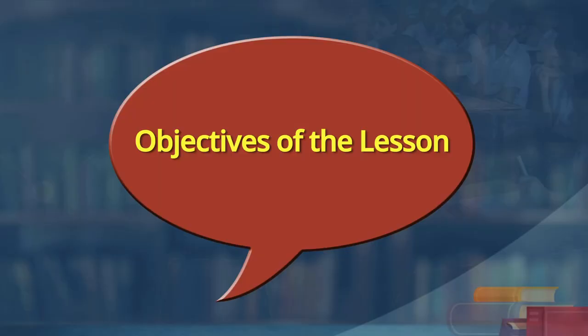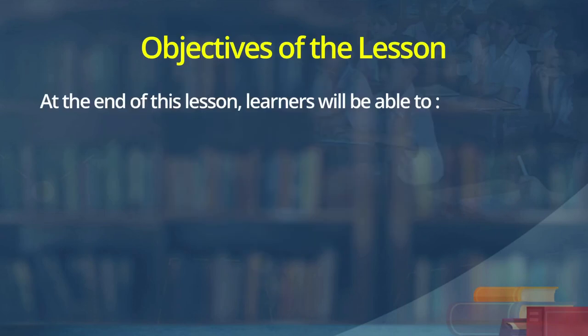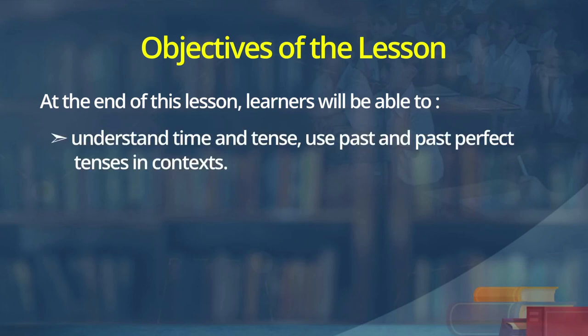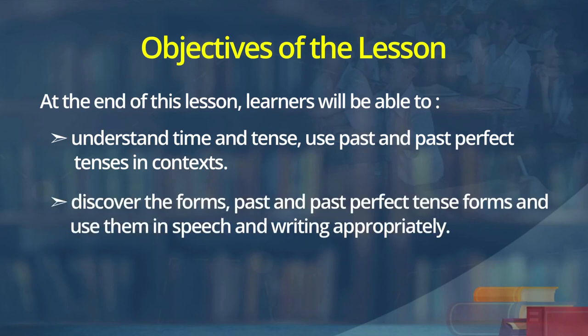So, Kriti and learners, we are going to learn the past tense and past perfect — that is, 'I did it' and 'I had done it.' These two time and tense usages we will learn today. Before we move on to learn past tense and past perfect tense and how they are used, let us know the objectives of this lesson. At the end of this lesson, learners will be able to understand time and tense, use past and past perfect tenses in context, discover the forms, and use them in speech and writing appropriately.